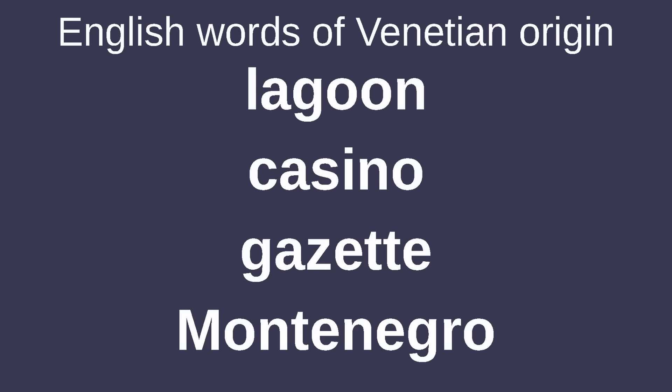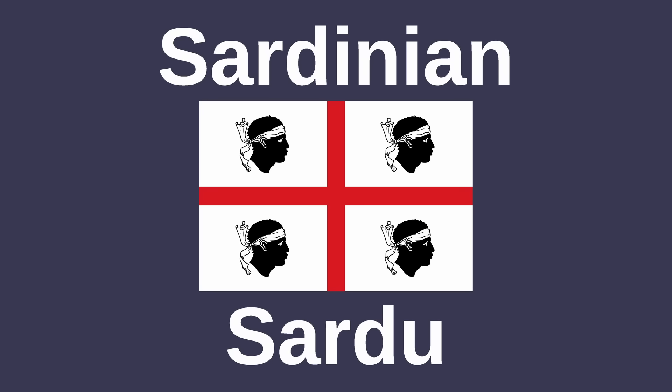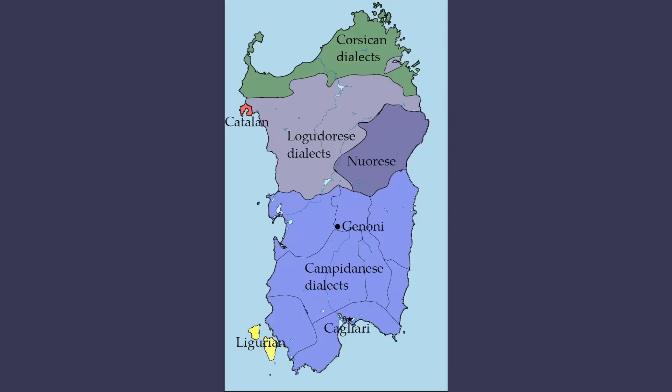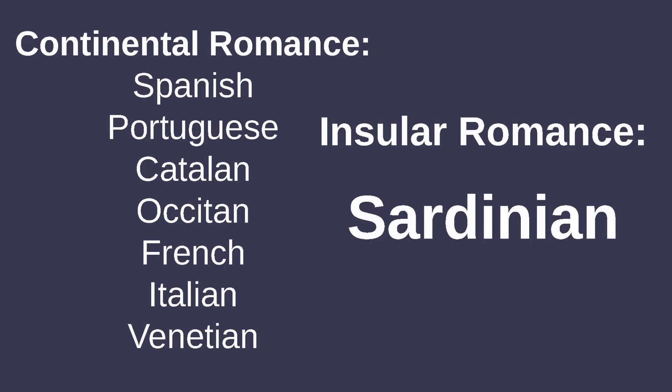There are also many Venetian words that have been loaned directly or indirectly into English, including 'lagoon,' 'casino,' 'gazette,' and the name for Montenegro. Sardinian is spoken in Sardinia, particularly in the parts that don't speak Corsican, Catalan, or Ligurian. Every Romance language discussed so far is part of the greater Continental Romance branch, but Sardinian forms its own Insular Romance branch, and is considered to be the closest out of all Romance languages to Latin.